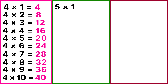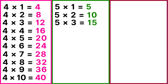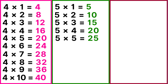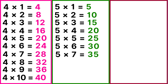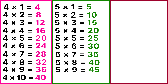Table of 5: 5 ones are 5, 5 twos are 10, 5 threes are 15, 5 fours are 20, 5 fives are 25, 5 sixes are 30, 5 sevens are 35, 5 eights are 40, 5 nines are 45, 5 tens are 50.